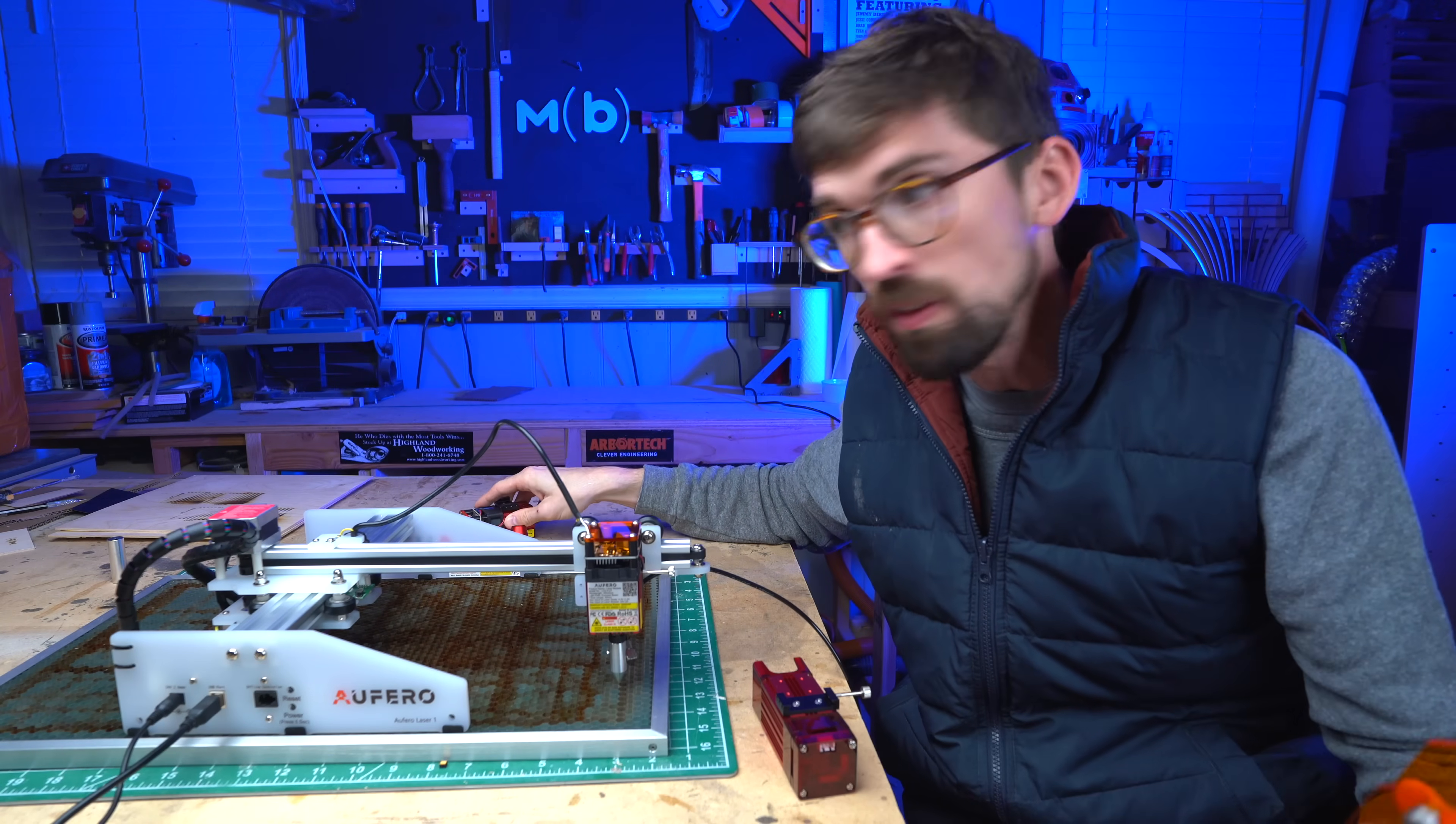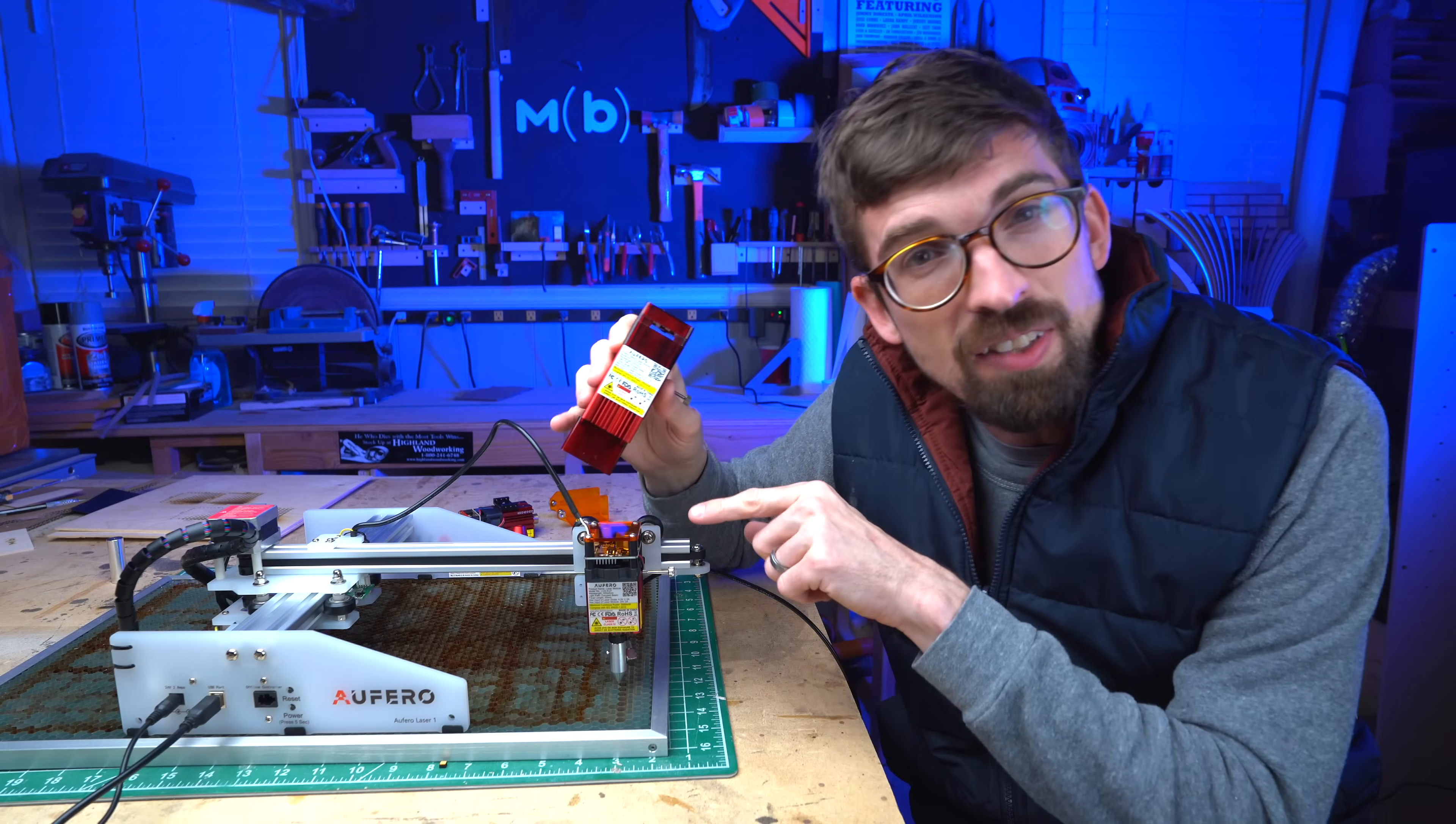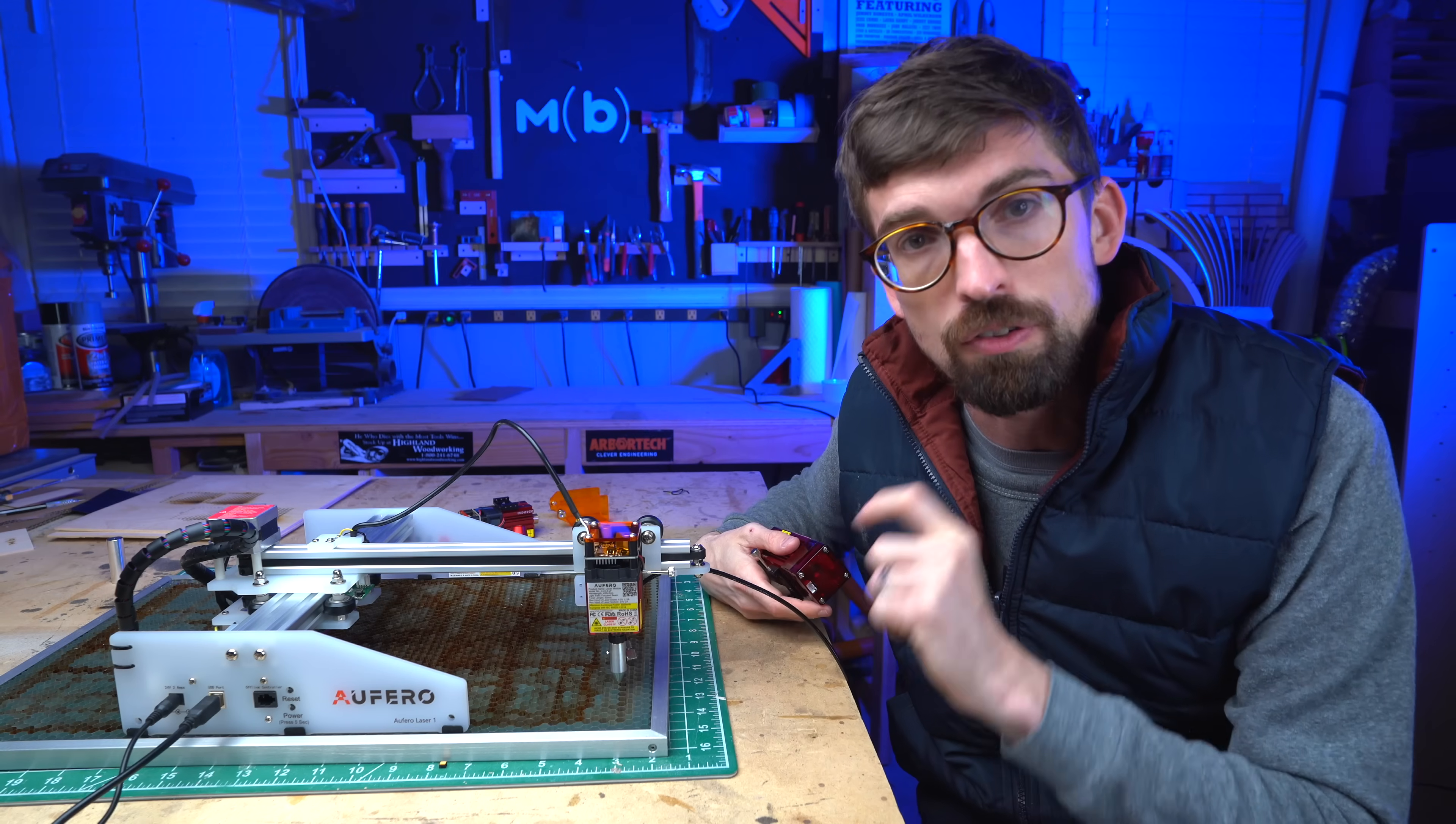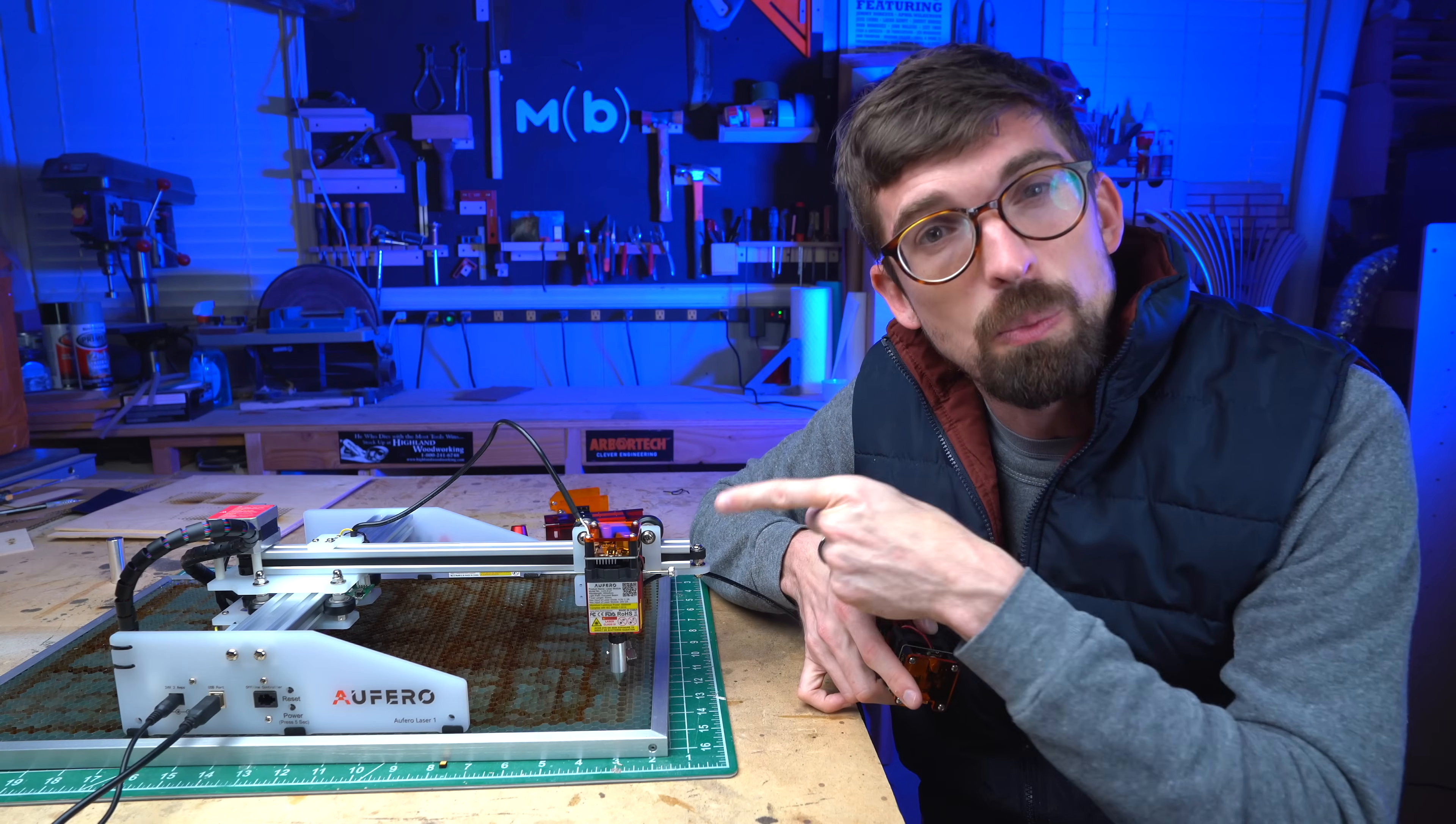Pretty much all of the laser modules have this little shield that will slide right onto it. This is interchangeable and you can put it on whichever one that you're going to use. This does a really good job of blocking most of the light, but you'll still always want to use safety glasses. Now the LU2-4 short focus or SF, they recommend for engraving versus the long focus, which they recommend for cutting. Both of these guys are four and a half to five and a half watts. The short focus has a 0.12 by 0.15 laser dot versus the long focus, which has a 0.17 by 0.25 laser dot. So a much bigger dot.